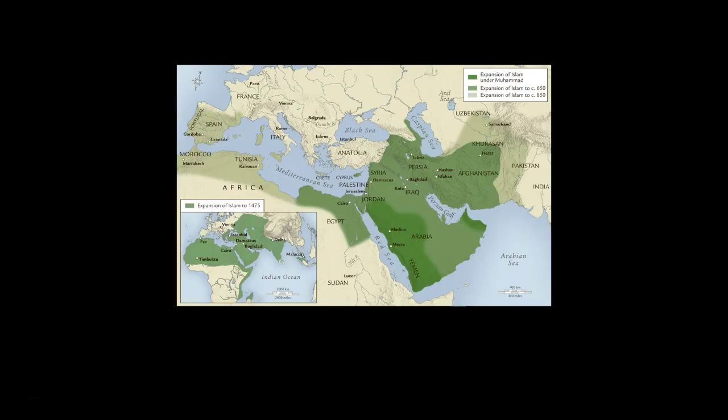Today, Islamic art describes all the arts that were produced in lands where Islam was the dominant religion or the religion of those who ruled. Unlike the terms Christian, Jewish, and Buddhist art, which refer only to religious art of these faiths, Islamic art is not used merely to describe religious art or architecture, but applies to all forms produced in the Islamic world. At one point they did have a pretty expansive territory — it even went into certain parts of Spain.